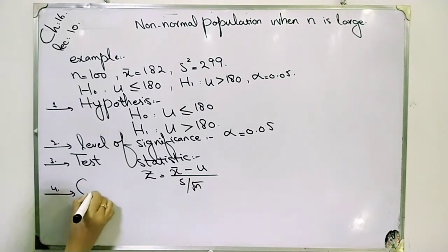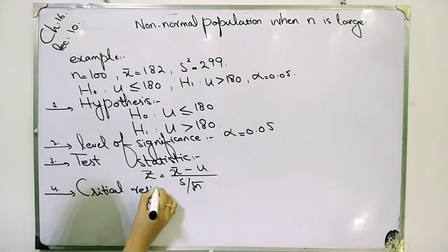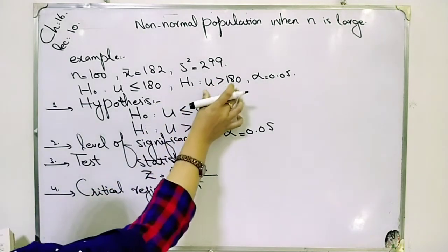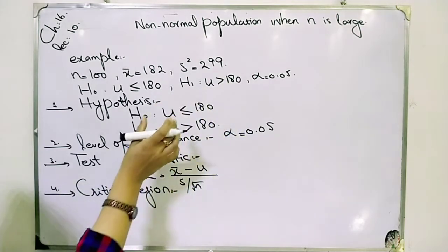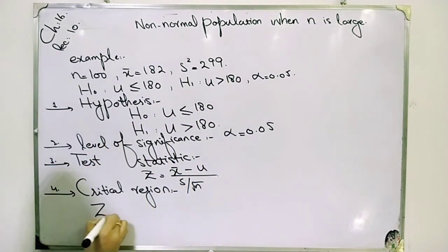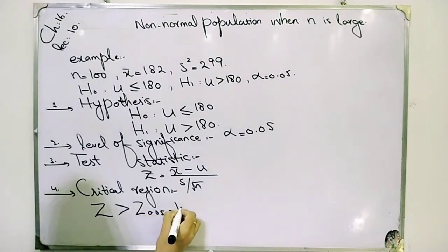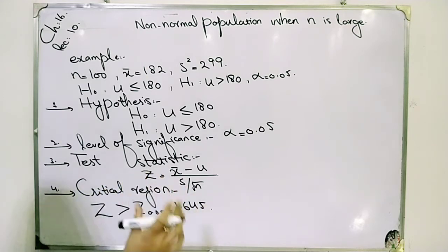Then we have critical region. Critical region is one-sided, so what is the critical region? Greater than z at 0.05, which is 1.645. This value I have written in previous lectures where I have made separate videos for one-sided and two-sided values.